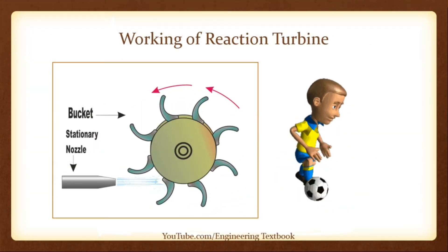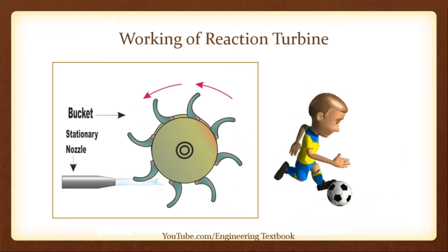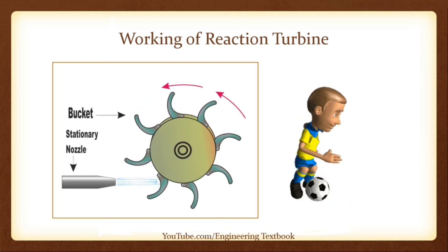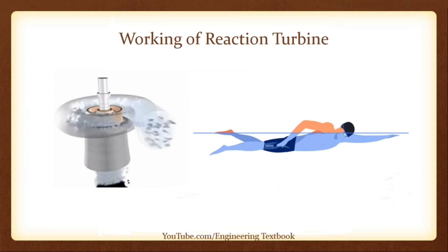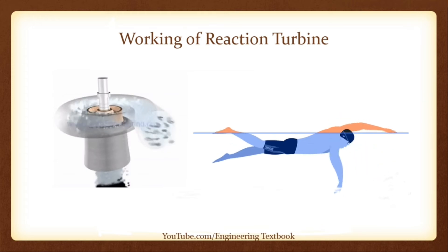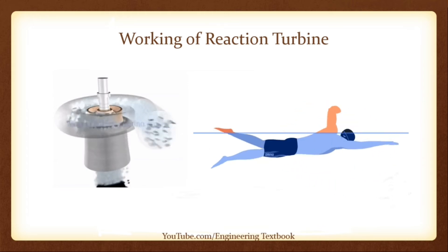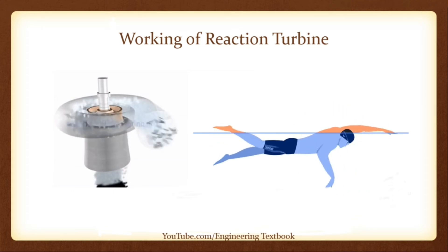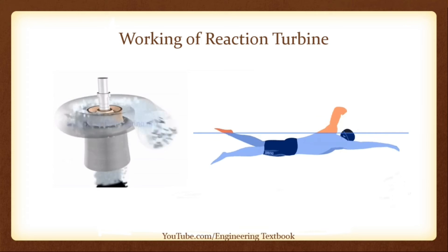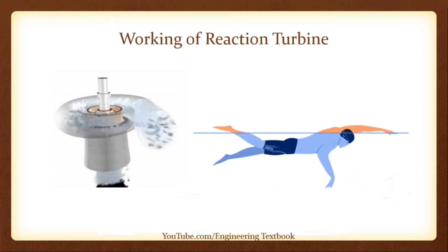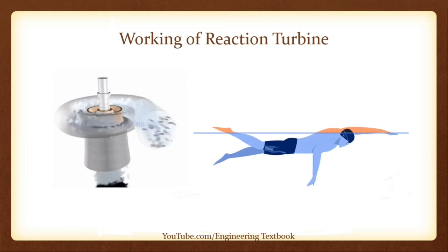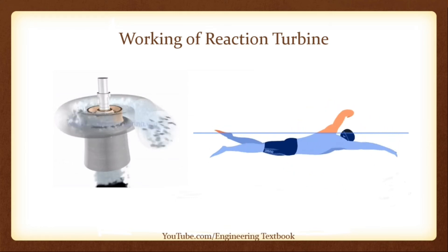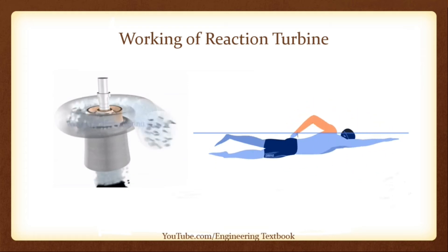Working of Reaction Turbine. If an impulse turbine is a bit like kicking a soccer ball, then the reaction turbine is more like swimming in reverse. Think of how you freestyle front crawl by pulling your arms through the water — starting with each hand as far in front as you can reach and ending with a follow-through that pushes your arms well behind you. What you are trying to achieve is to keep your hands and forearms pushing against the water for as long as possible, so you can transfer as much energy as you can in each stroke.